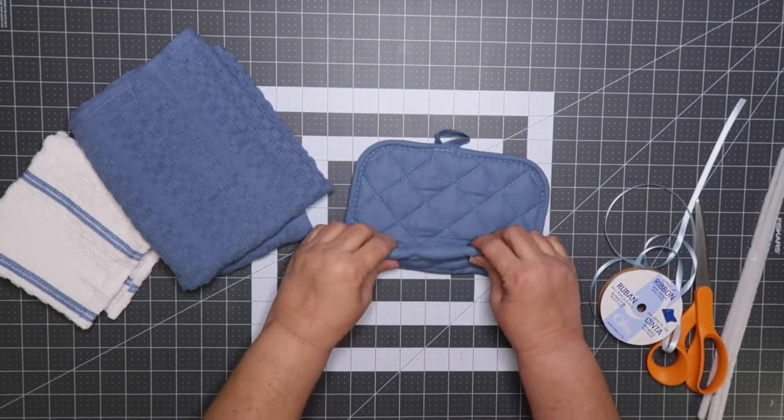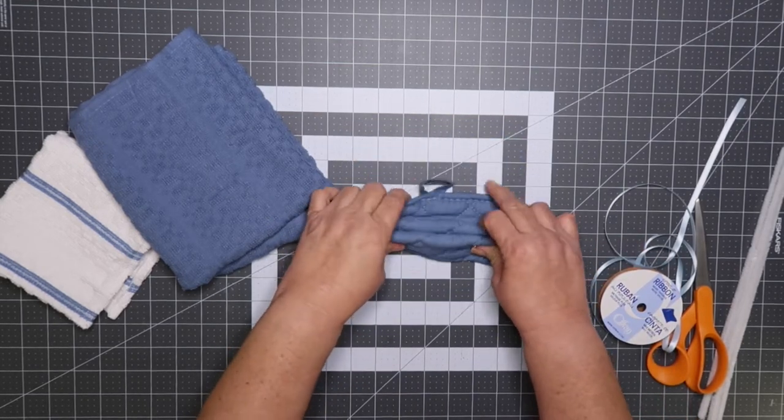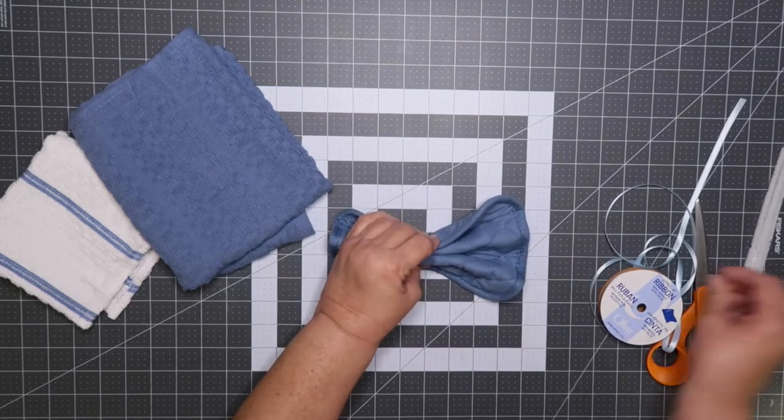I begin by making the wing. You fold up the pot holder and then secure with the chenille stem.